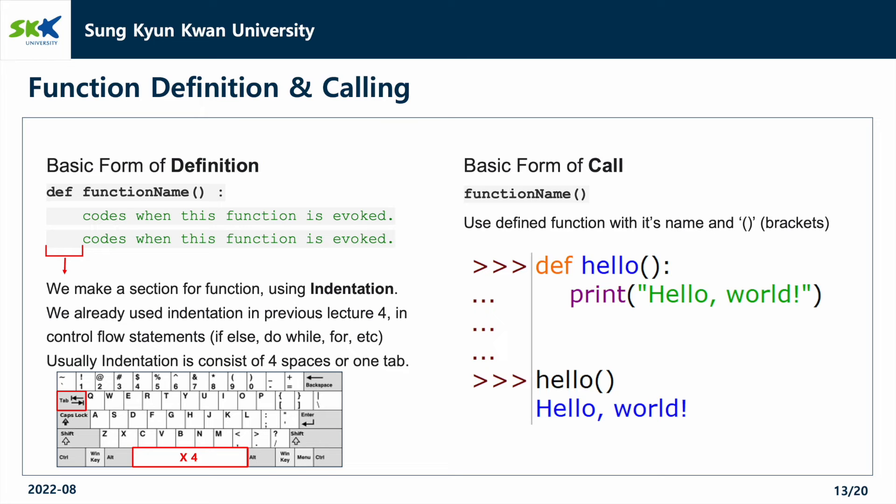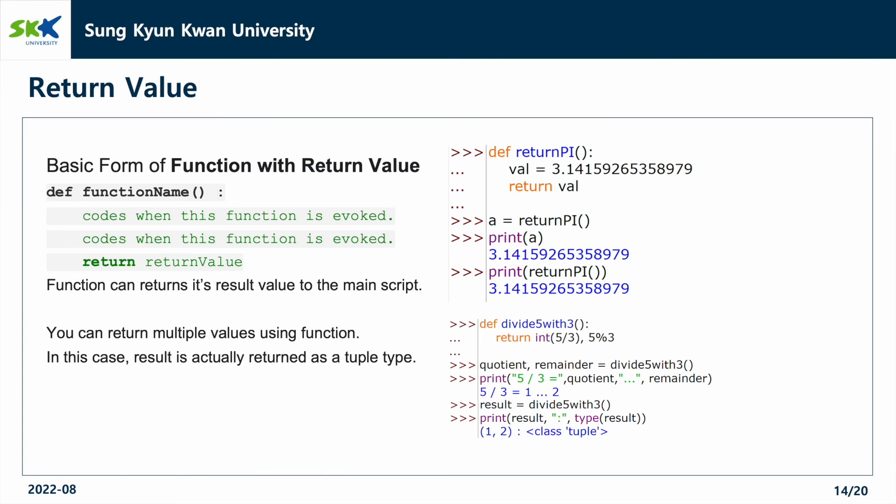Next, let's learn how to call a function. You can call the function by the function name you defined and brackets. This time, let's learn about the return statement. Function can return its result value to the main script. Also, you can return multiple values using a function. In this case, the result is actually returned as a tuple type.